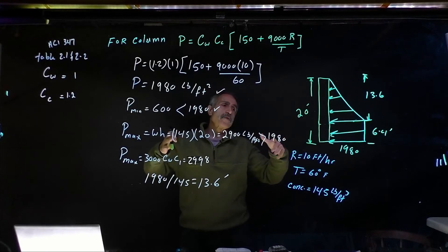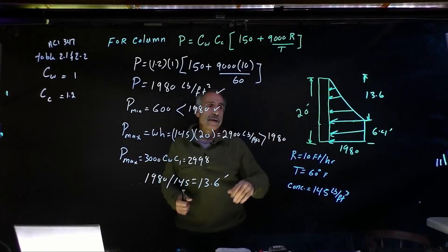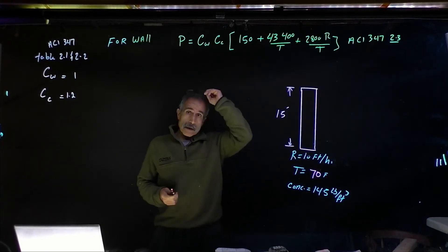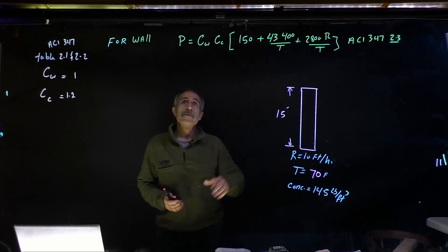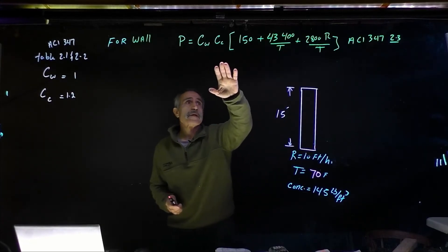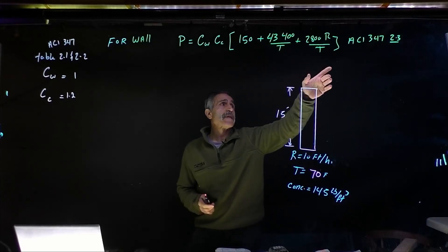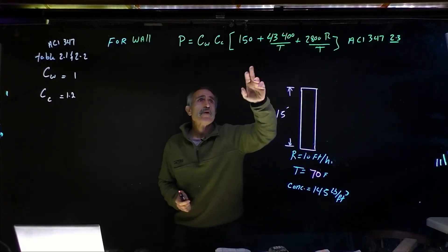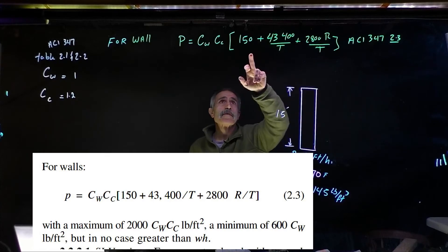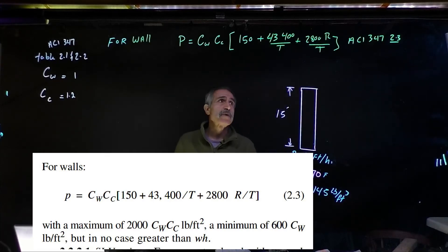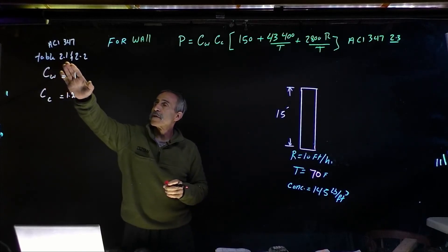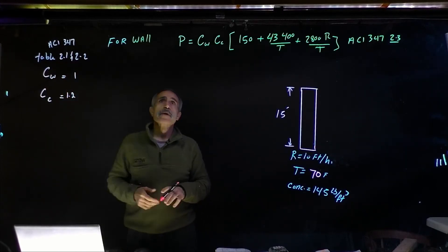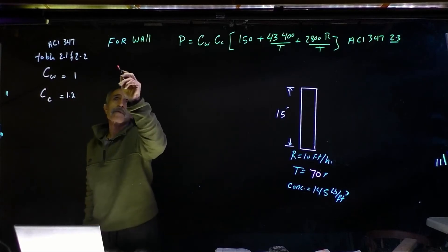So we're going to go ahead and do the same thing using a wall form. Alright, so now we're going to do the same thing for a wall form. And for a wall form, the pressure has a different equation from ACI 347 section 2.3. You can get this number from a table. There's a table there, but it takes two seconds to calculate anyway. Factors for these two are basically the same from table 2.1 and 2.2. So let's find out what we're going to come out with here.